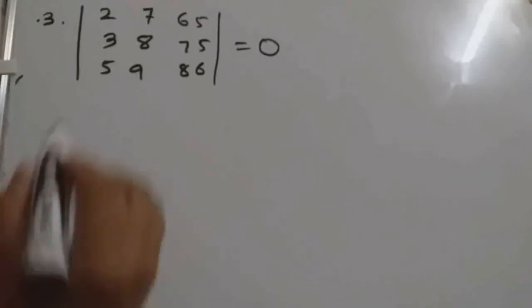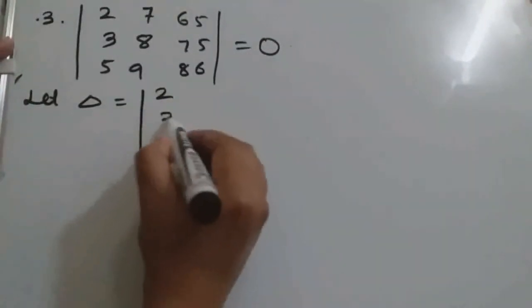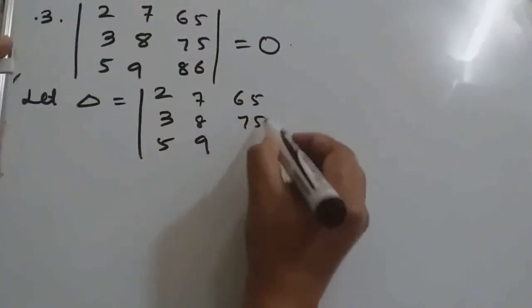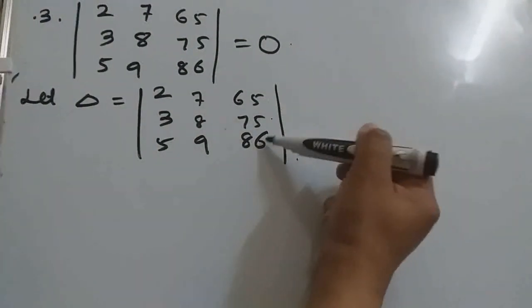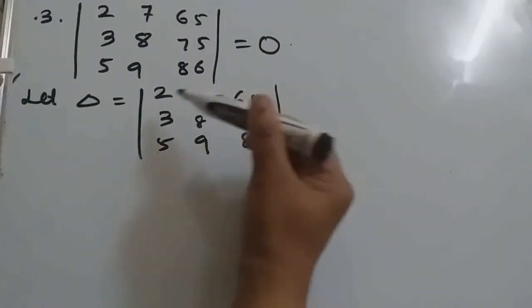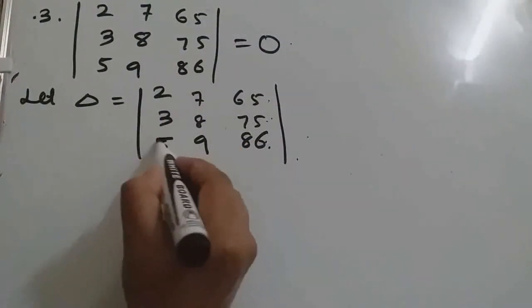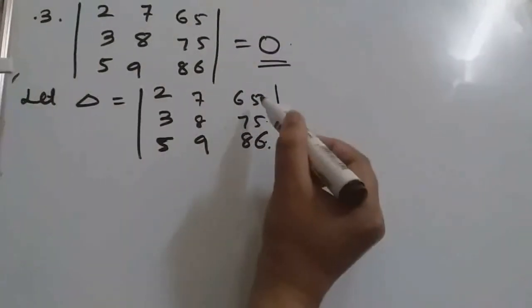Question number 3 also, we should prove this determinant is 0. So we will consider let delta. Now see, in one column the numbers are very big: 65, 75, 86. Here 2, 3, 5, 7, 8, 9. So we will go for the second option. We will try to make any two column or any two row identical, so that we can get directly 0. Because we want to prove that determinant value is 0 here.